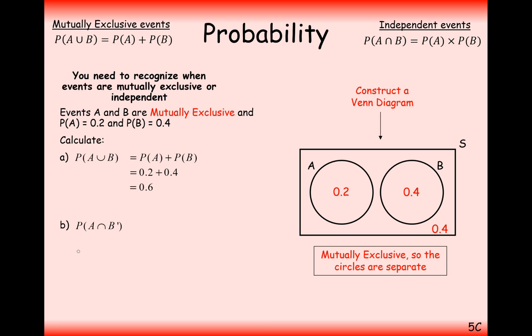Now find the probability of A and not B. Since the events are mutually exclusive, this is just the part of the A circle that doesn't overlap with B, which is 0.2. The probability of not A and not B is the region outside both circles, which is 0.4.